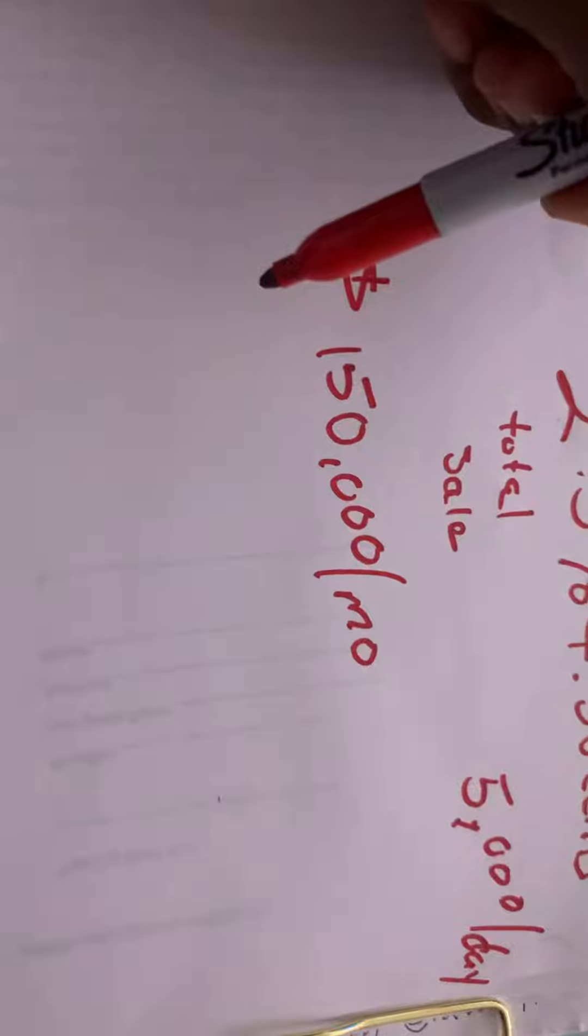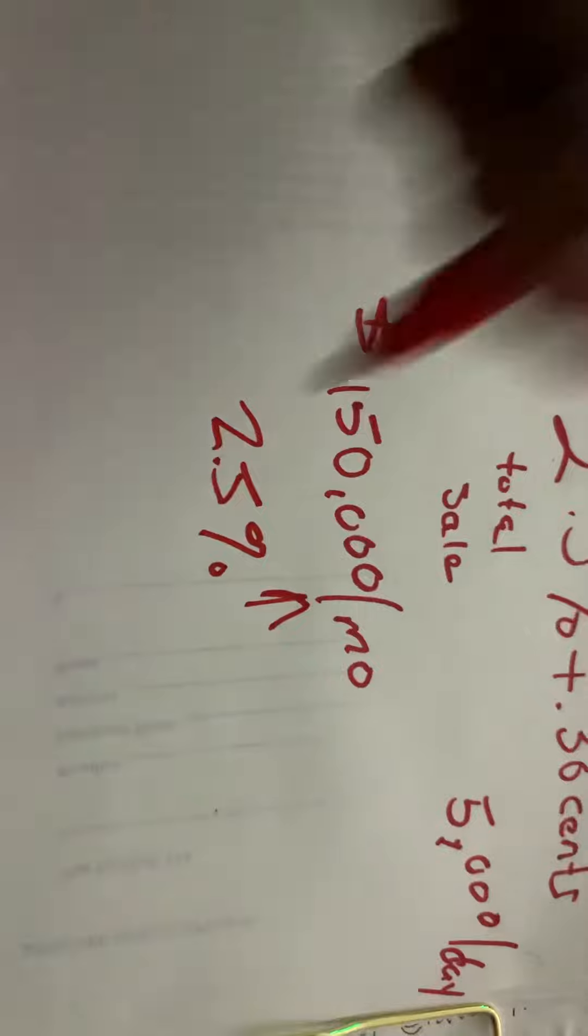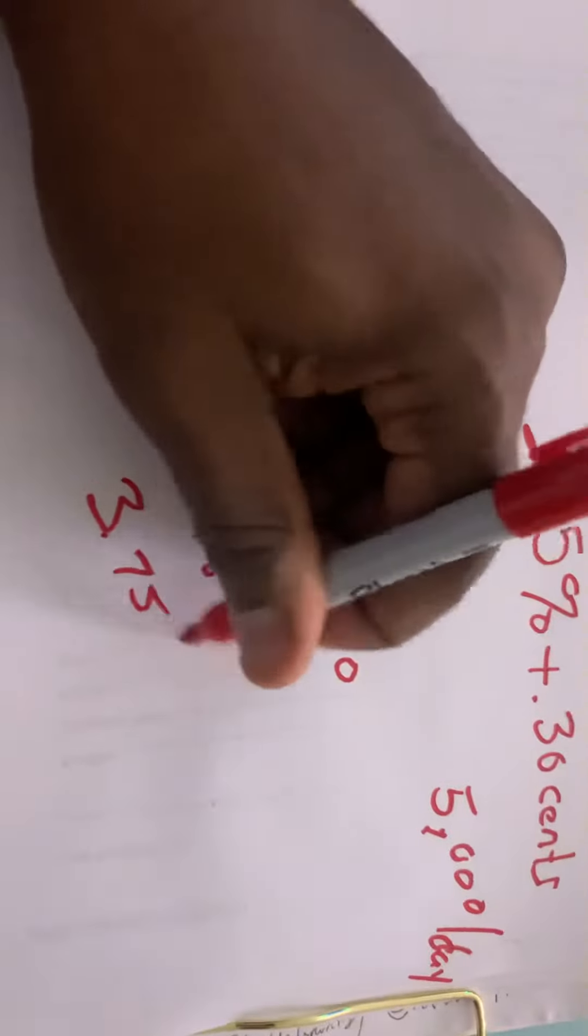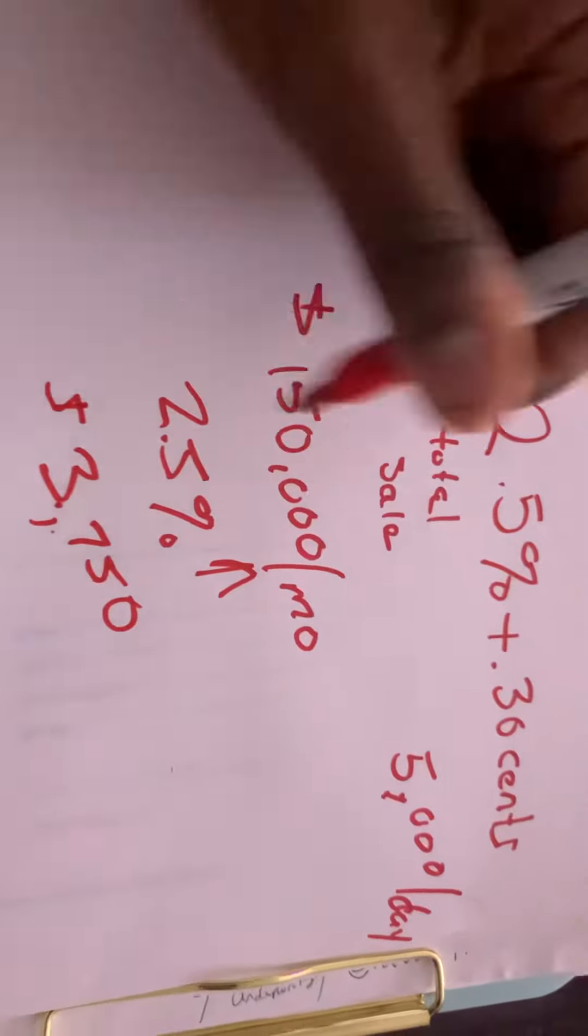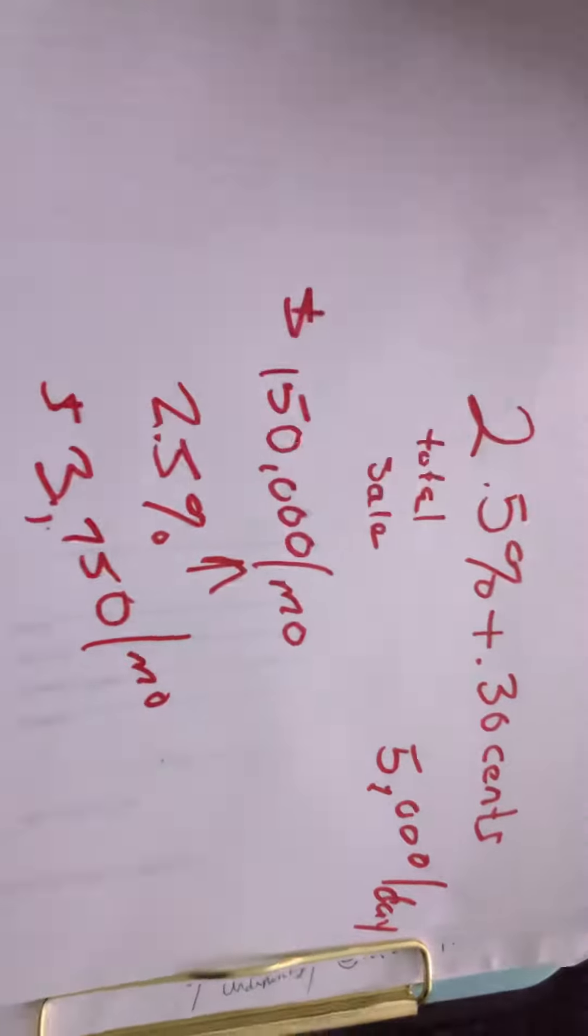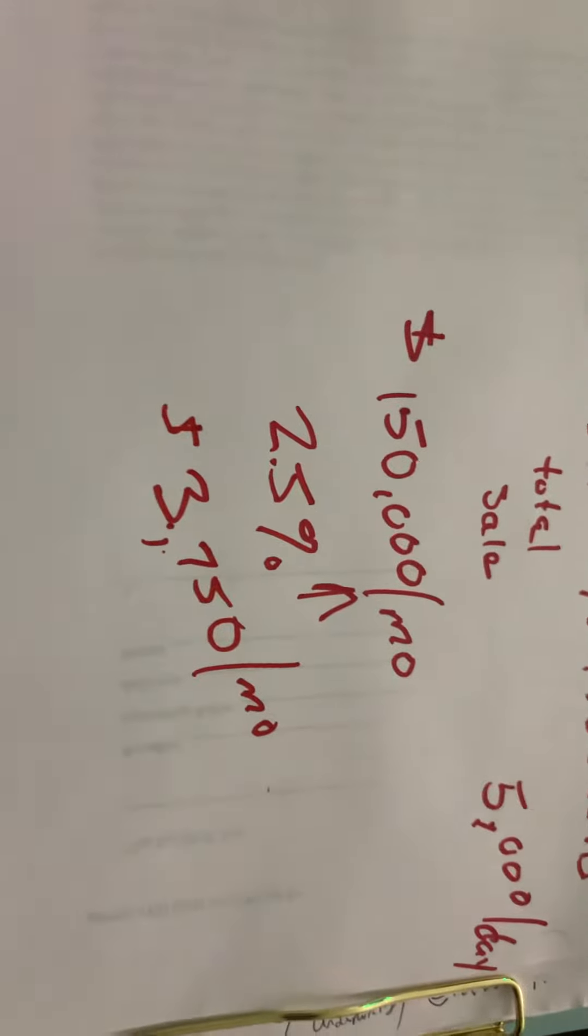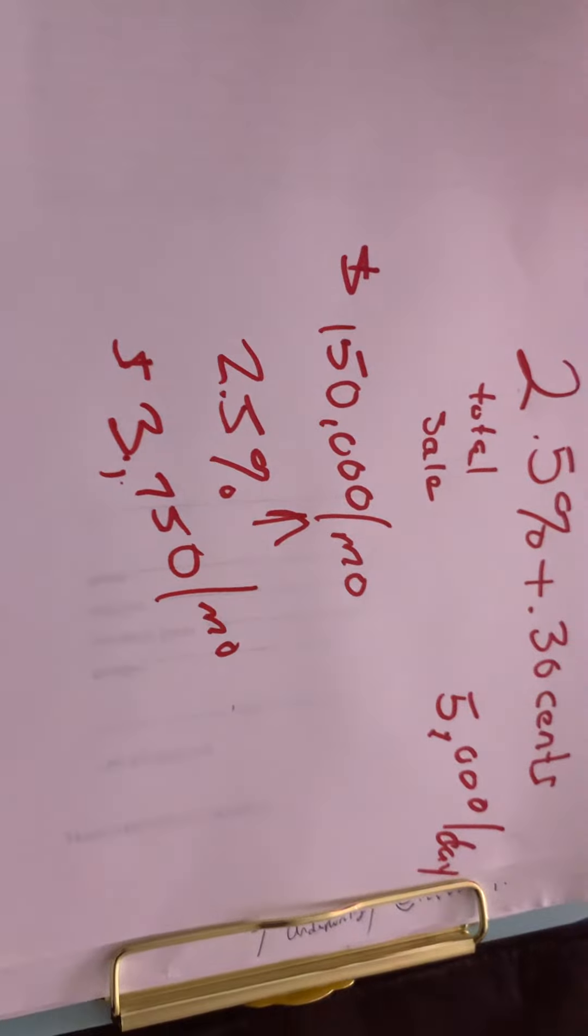So 2.5% of $150,000 is $3,750 that you would make or I would make on this particular deal.